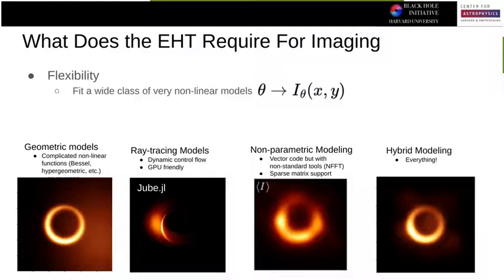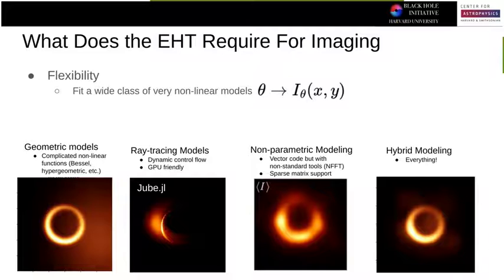So one of the things I wanted to figure out was how we can improve this. To do that, we need to ask what the EHT actually requires for imaging. It needs flexibility — we have a very wide class of models. There are really simple things like geometric models: rings, disks, or whatever. In the Fourier domain this results in Bessel functions, hypergeometric functions, all these funky things. We also have ray tracing models, where we take an actual set of emission around a black hole and ray trace back to our eyes to see what it actually looks like.